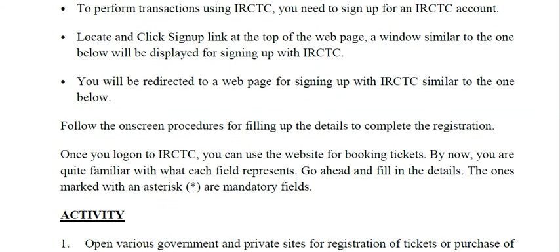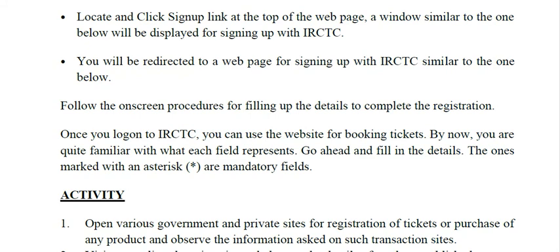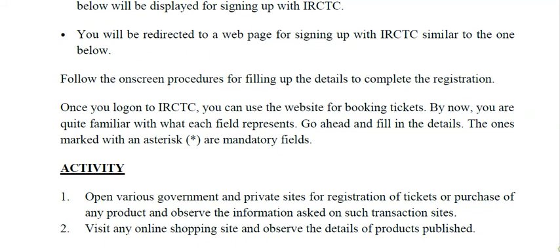Most of you must have ordered something from online stores or booked a train ticket from IRCTC. If not, you can try, and if you need help, you can take help from your parents. The activity for this session is: open various government and private sites for registration of tickets or purchase of any product and observe the information asked on such transaction websites. Also visit any online shopping site and observe the details of products published.